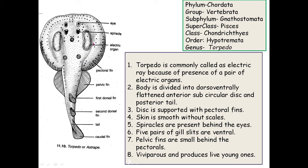The body of Torpedo is dorso-ventrally flattened; the anterior part forms a sub-circular disc and the posterior region is the tail. The disc is supported by pectoral fins. The skin is smooth with no scales. Spiracles are present behind the eyes, and five pairs of gill slits are present in a ventral position.